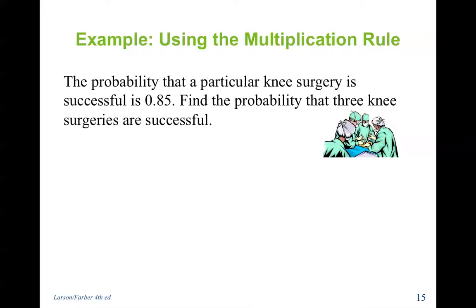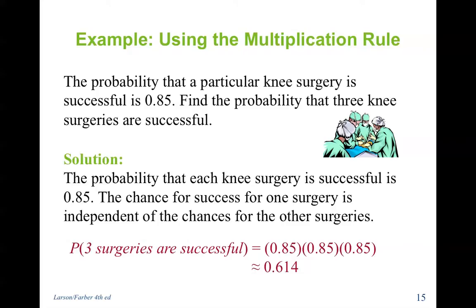The probability that a particular knee surgery is successful is 0.85. Find the probability that three knee surgeries are all successful. Each surgery is independent of the others — just because surgery happened yesterday does not affect today's surgery. So it is 0.85 times 0.85 times 0.85, giving a probability of 0.614 that all three surgeries are successful.